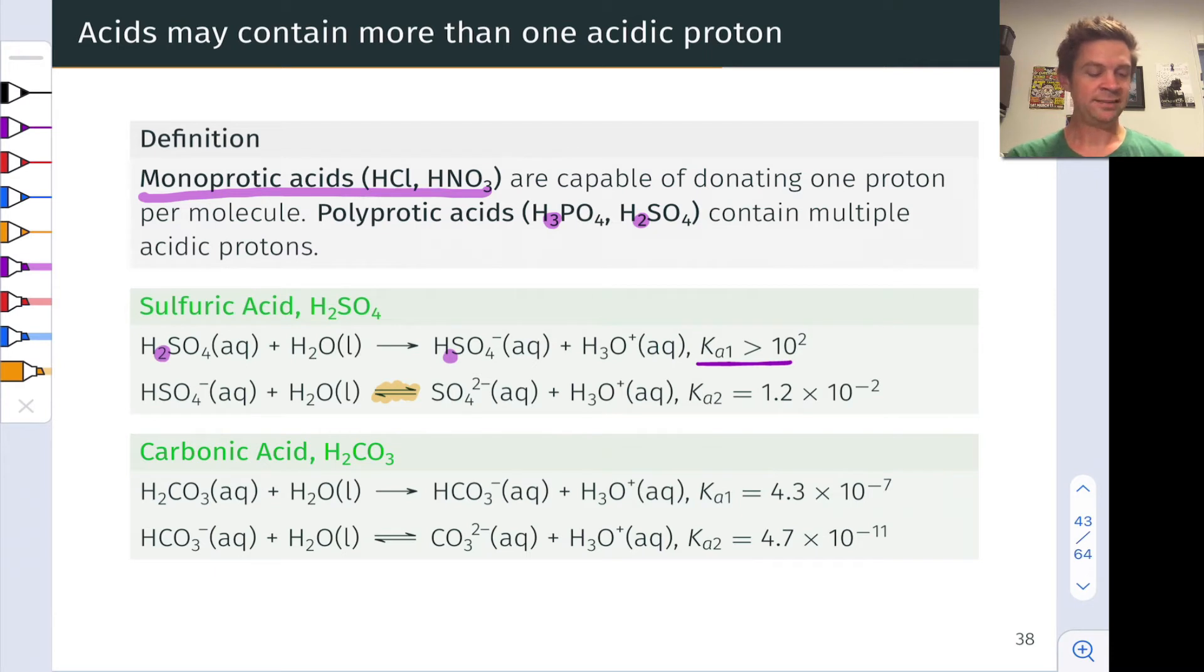Here, the second Ka value is quite a bit smaller than Ka1 and is actually less than one, indicating that the acid is weak.